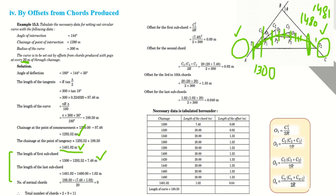The remaining distance after the last normal chord at 1480 up to T2 at 1481.02 is 1481.02 − 1480 = 1.02 meters. This is the length of the second (final) sub-chord. Sub-chords always appear at the start and end of the curve — one or two sub-chords — the initial sub-chord and the final sub-chord. Normal chords are those at equal intervals in between.